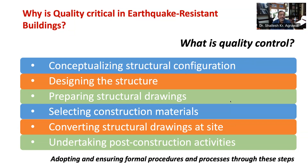The fourth step is selecting construction materials — contractors need to take utmost care in selecting the intended construction materials and adopting construction procedures as per standard specifications. The fifth step is converting structural drawings at site, where competent site engineers need to faithfully follow structural drawings to ensure that the design intent is realized in the building, working with certified artisans as per good construction practices laid down in standards and specifications. The last step is undertaking post-construction activities, where maintenance engineers need to embed long-term maintenance steps, thereby avoiding structural damage and preventing damage to critical structural members.